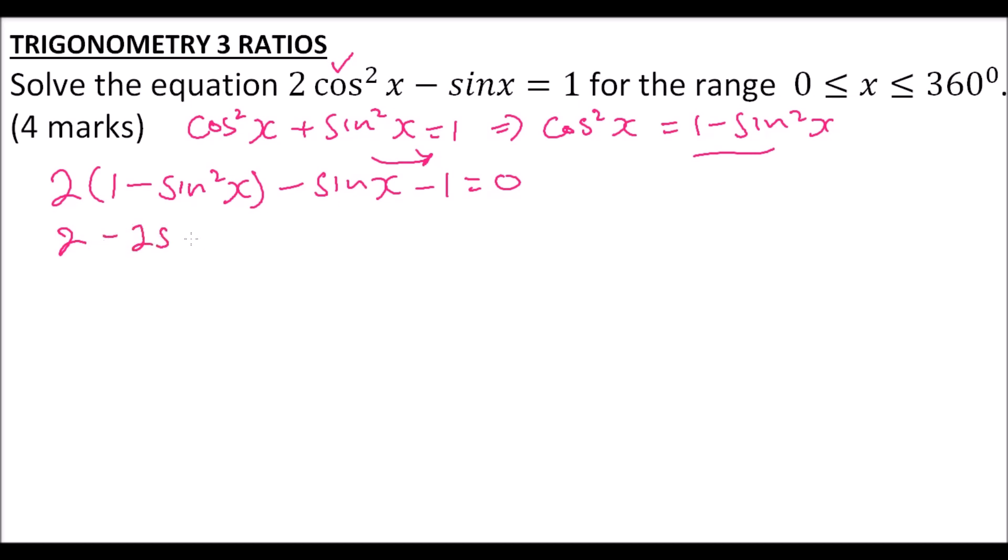When you open the bracket, this will be 2 - 2sin²x - sinx - 1. Two minus one is one, so we have 1 - 2sin²x - sinx = 0.